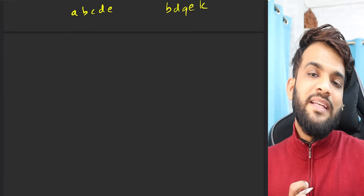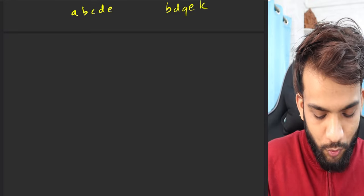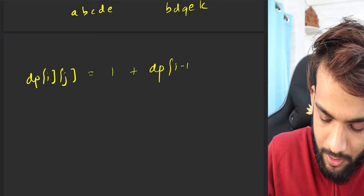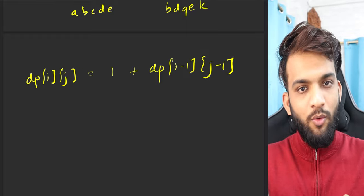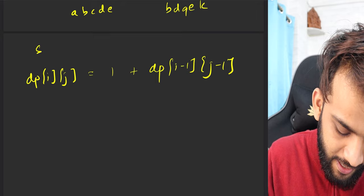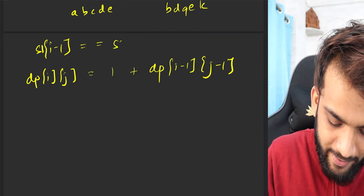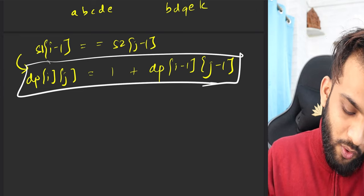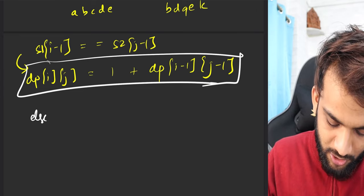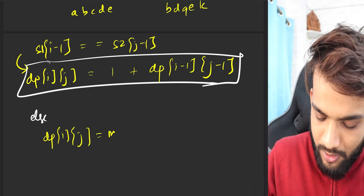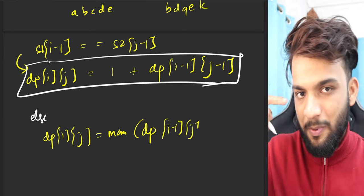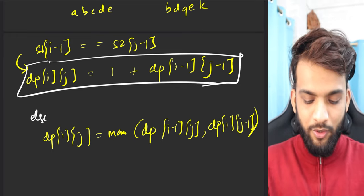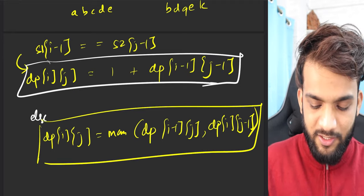How do we compute the answer? The tabulation formulas were: dp[i][j] = 1 + dp[i-1][j-1] when s1[i-1] == s2[j-1] (characters match), or else dp[i][j] = max(dp[i-1][j], dp[i][j-1]) — either the previous row same column, or the same row previous column.